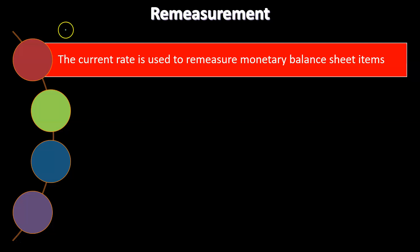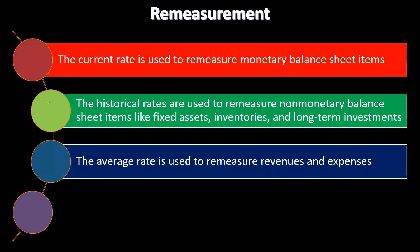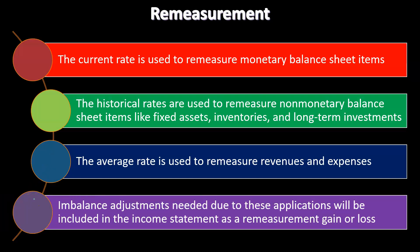Continuing with the remeasurement process: the current rate is used to remeasure monetary balance sheet items. Historical rates are used to remeasure non-monetary balance sheet items such as fixed assets, inventories, and long-term investments — because the historical rate reflects the exchange rate at the point in time those large purchases were made. The average rate is used to remeasure revenues and expenses, since an average better reflects activity across the period.